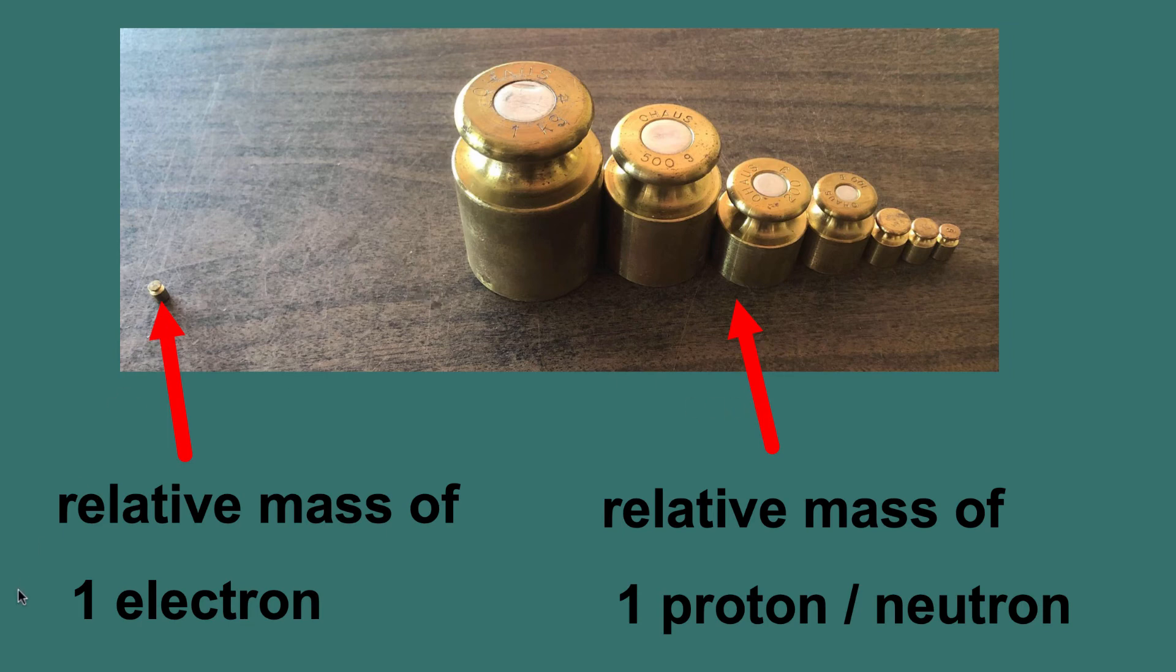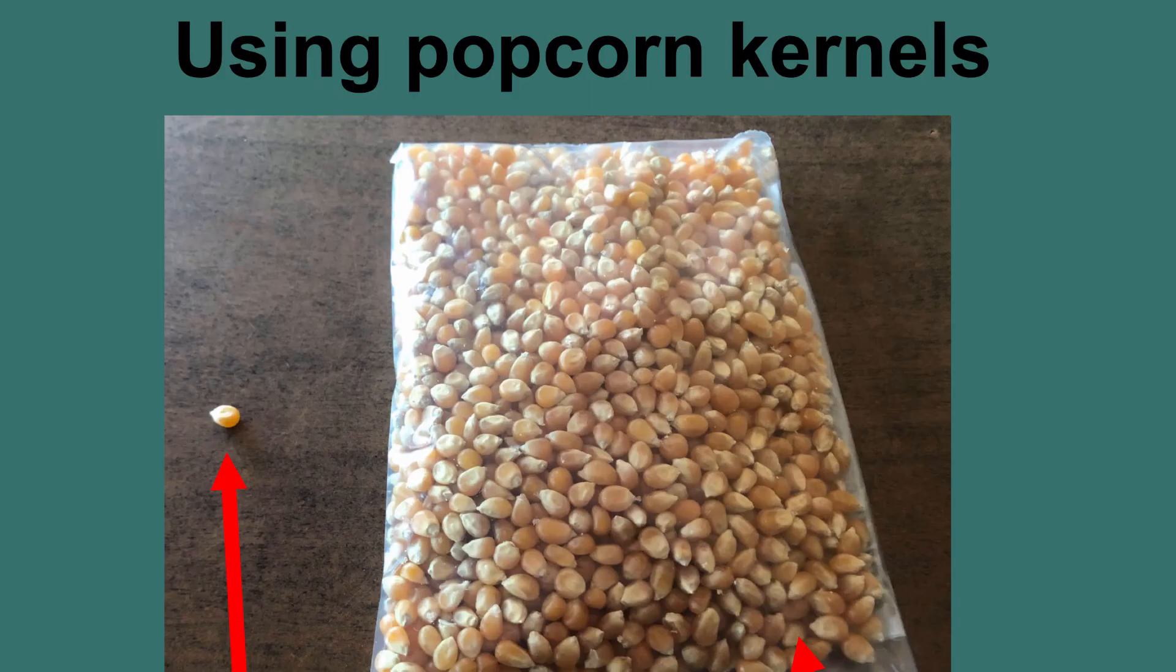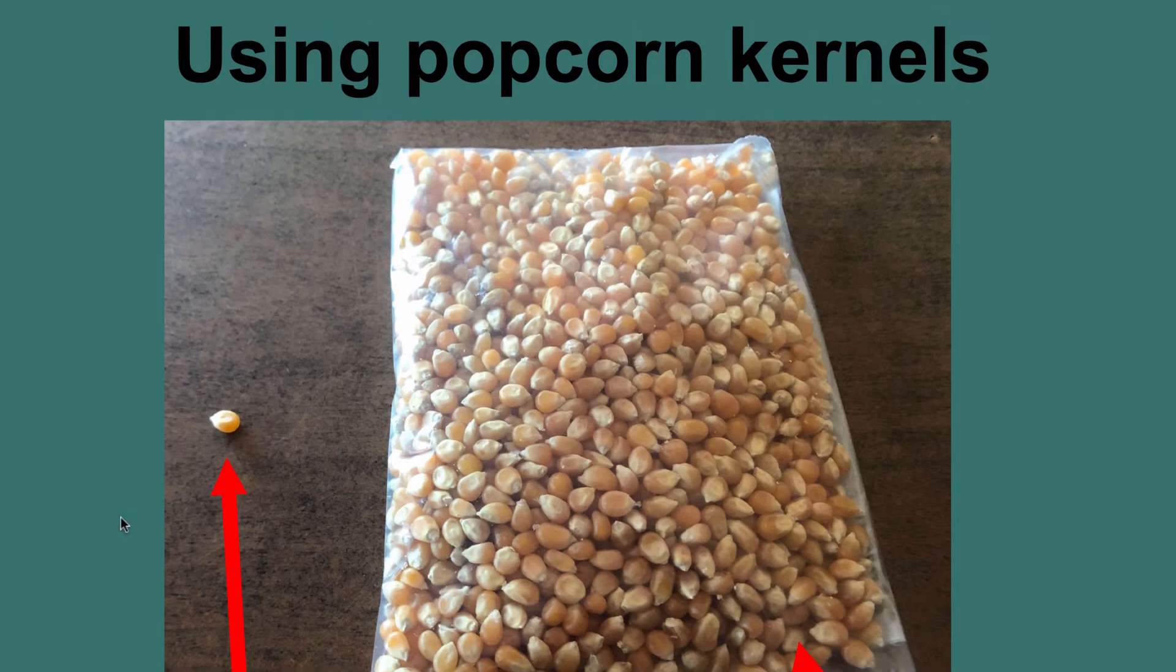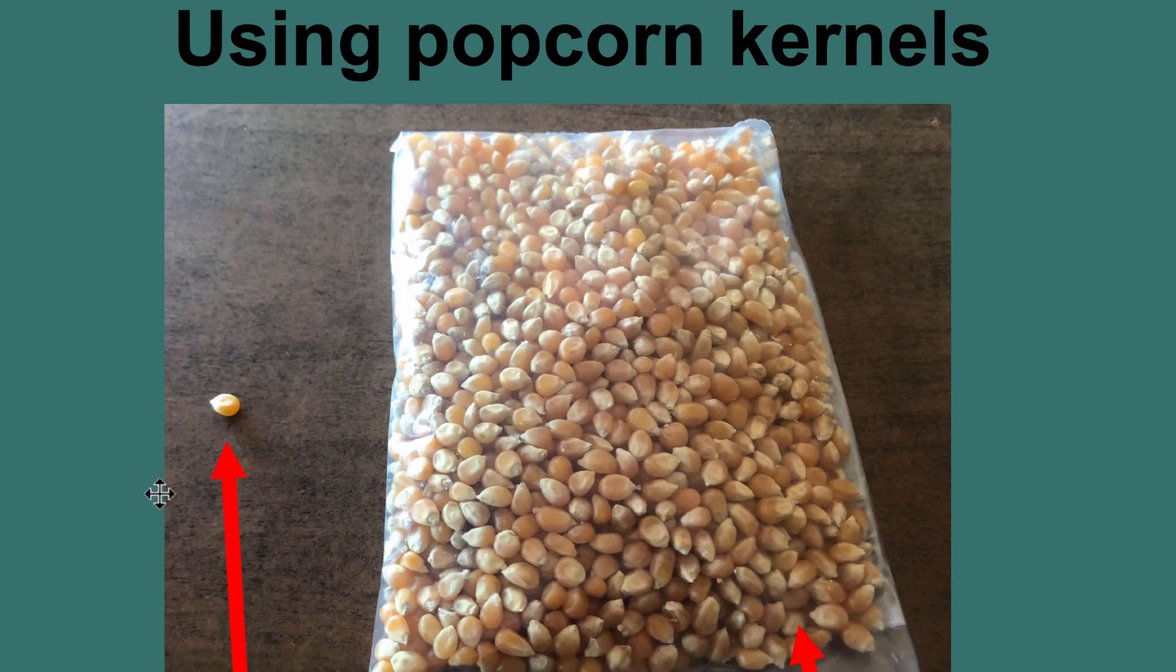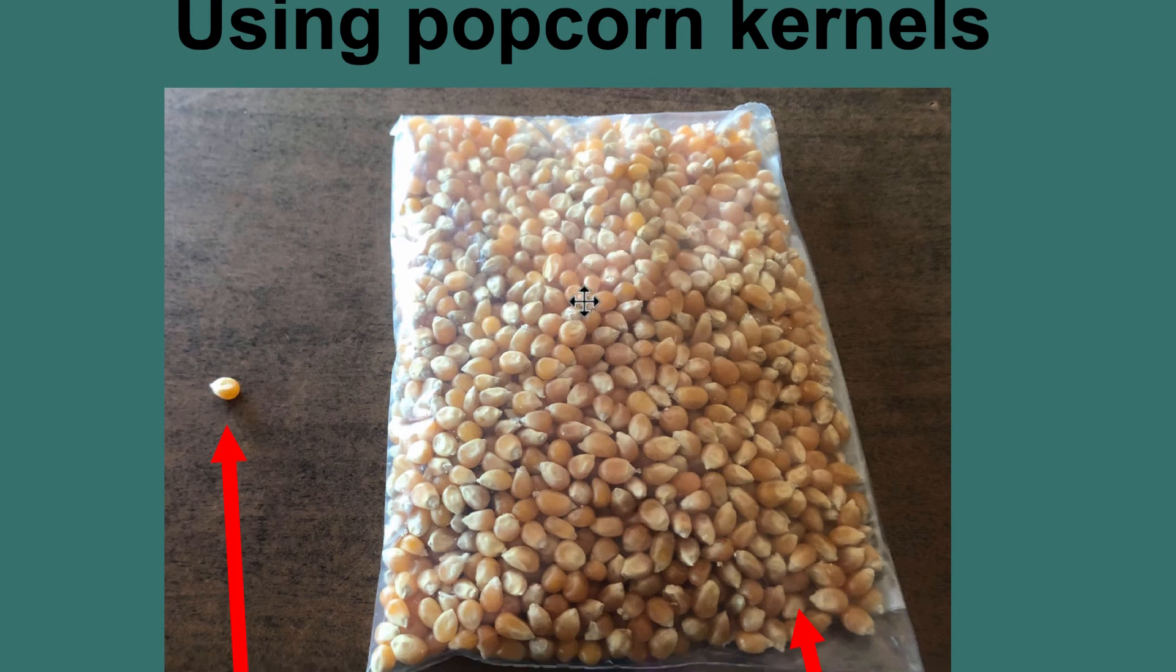Now if you don't have these mass sets, another idea might be using something like popcorn. So pretty cheap, easy to use. I'm going to say that an electron is equivalent to one popcorn kernel, and then what I did was figure out the equivalent number of grams to get our 1836 popcorn seeds or kernels.